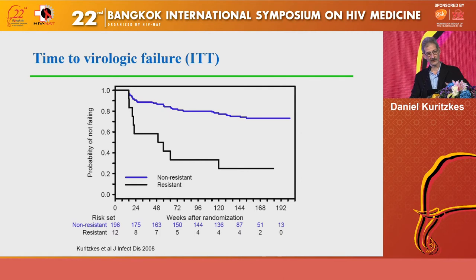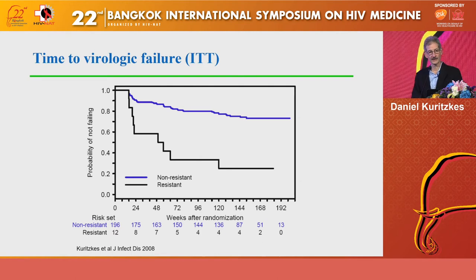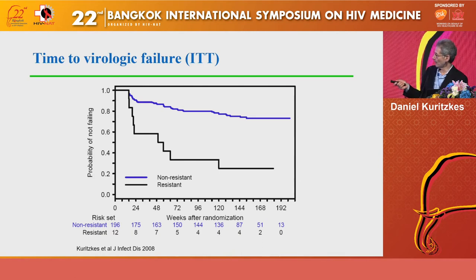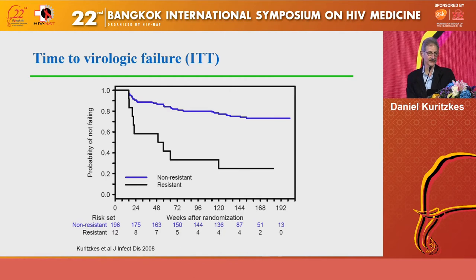Going back to baseline samples and doing viral genotyping, we identified those who had resistance to efavirenz or other NNRTIs, and showed that those participants were 2.5 times more likely to develop virologic failure compared to those with wild-type virus. However, having resistance did not always lead to failure — a small number remained virologically suppressed — and not having resistance was no guarantee of success because adherence and tolerability still played an important role. Resistance is an important determinant of treatment success, but not the sole determinant.